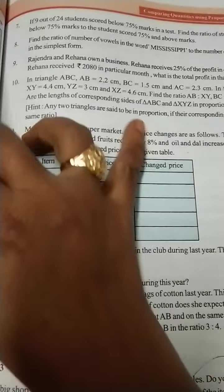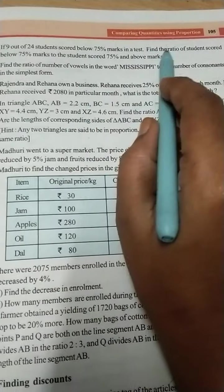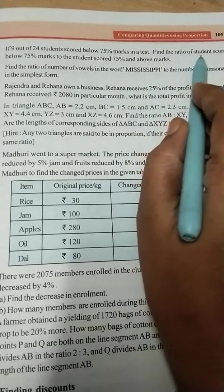The given question is: if 9 out of 24 students scored below 75% marks in a test, find the ratio of students scored below 75% marks to the students scored 75% and above marks. This is the given question. We need to find out the ratio of students scored below 75% marks to the students scored 75% and above marks.